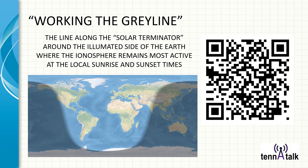Let's talk about working the gray line. It's the line along the solar terminator around the illuminated side of the Earth where the ionosphere remains most active at local sunrise and sunset times. Here we are at sunset on the west coast — at that time you have a good chance of communicating along this path to India, the sub-Indian continent, up into Russia and Siberia, and back over to the northern tip of Alaska. A QR code sends you to a live map of where the gray line is on the world map at any moment.